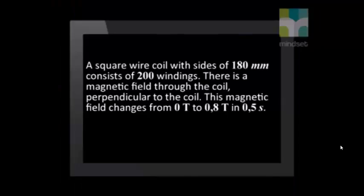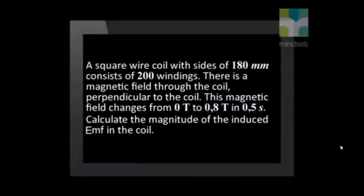Let's look at two examples where we apply this knowledge. Please have a paper, a pen, and a calculator with you if possible so that you can do the calculation with us. A square wire coil with size of 180 mm consists of 200 windings. There is a magnetic field through the coil, perpendicular to the coil. This magnetic field changes from 0 tesla to 0.8 tesla in 0.5 seconds. Calculate the magnitude of the induced EMF in the coil.